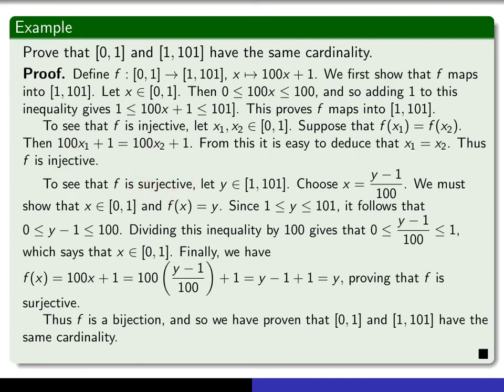Surjectivity is a little bit more involved. You have to give yourself something in the target, in the codomain. So you let y be in this interval. Then you have to explain how to choose an x in your domain which maps to that y. And so you choose your x by (y-1)/100, because that just says that y is equal to 100x plus 1.